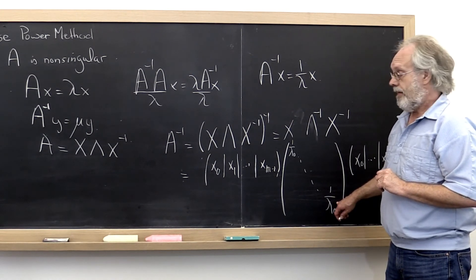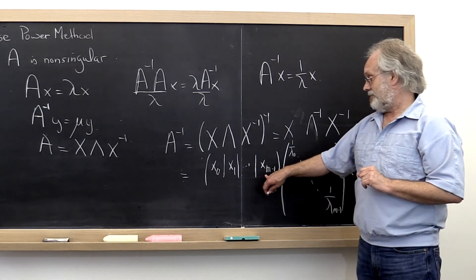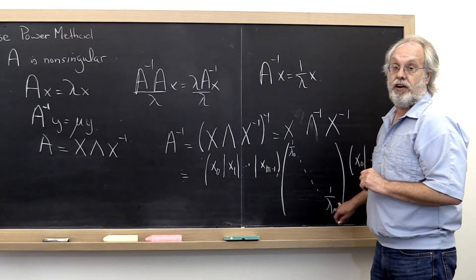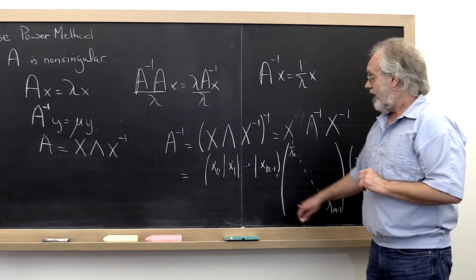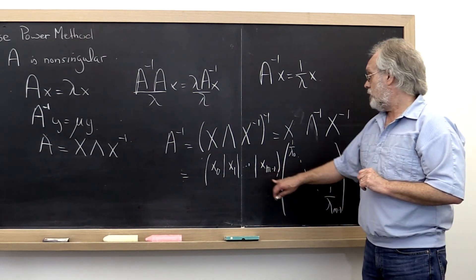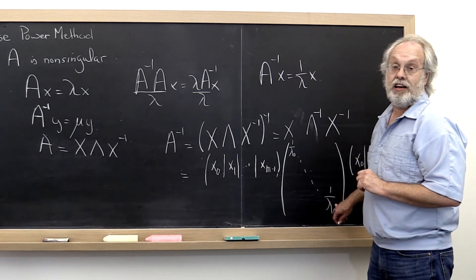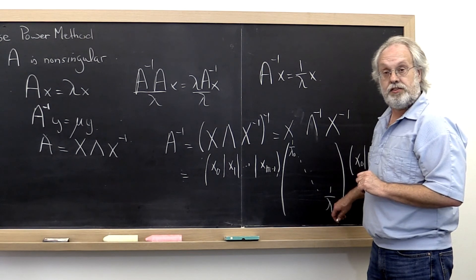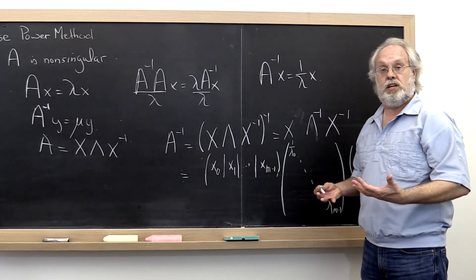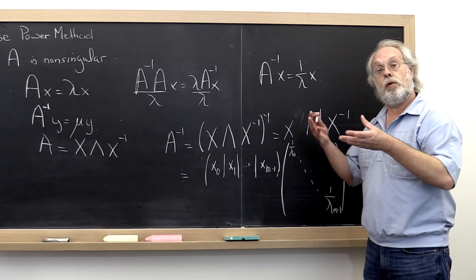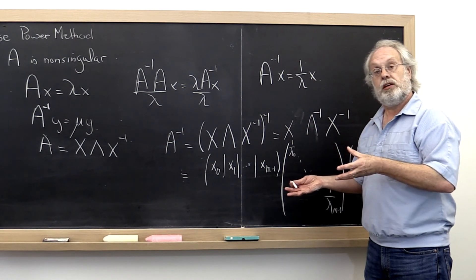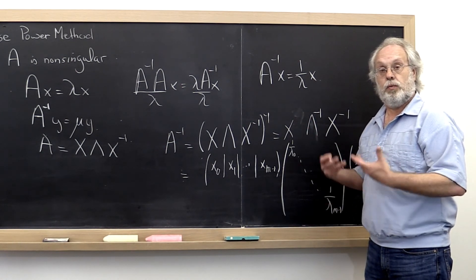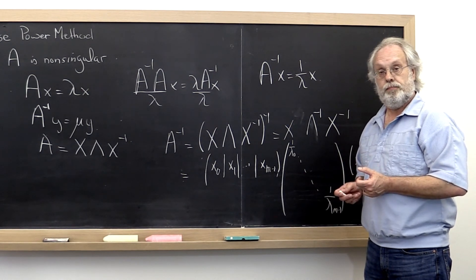So the eigenvector associated with the smallest eigenvalue of A. And that gives us all the insight we need to now transform the power method into a method for finding the eigenvector associated with the smallest eigenvalue of A.